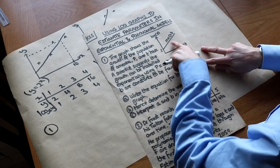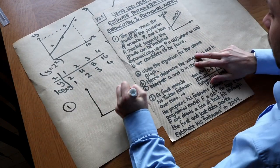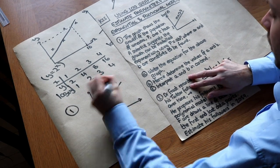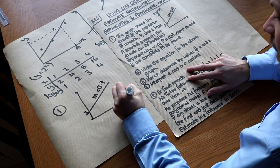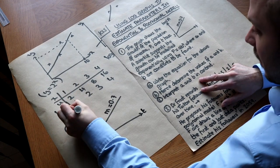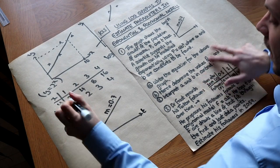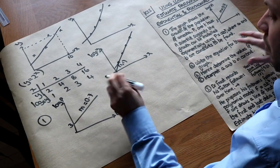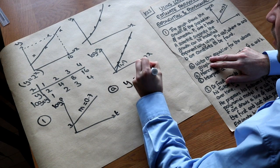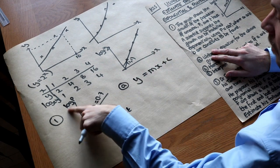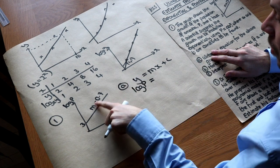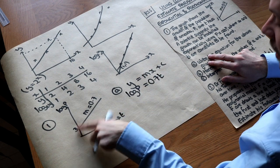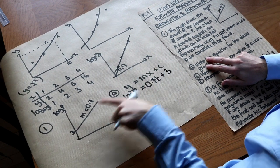We need to write the equation for the above graph. We have a straight line with gradient M equal to 0.7 and y-intercept of 3. The x-axis is actually T and the y-axis is actually log of P. So the equation of this line is: log P equals 0.7T plus 3.